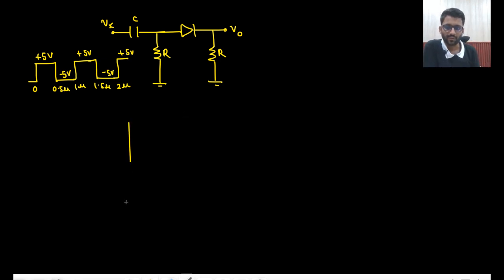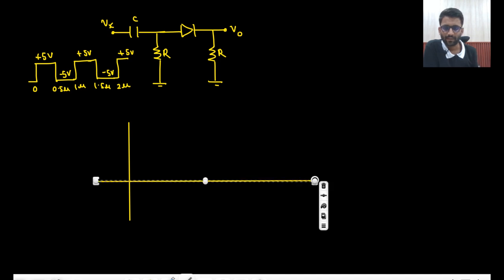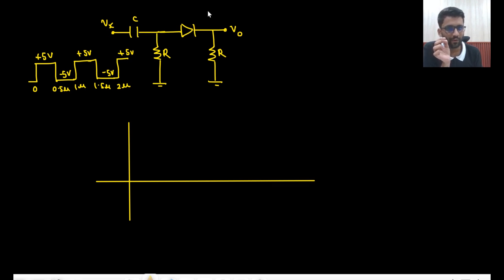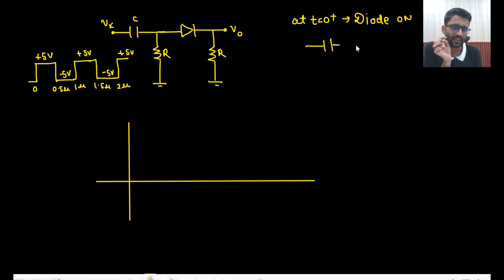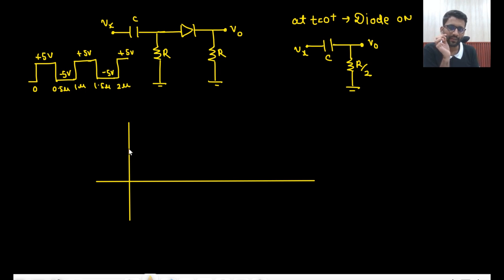Now let us draw the Vout waveform. Initially 5 volts will come, the capacitor is having 0 voltage, so 5 volts will directly come here and the diode will be turning on. At T equals 0 plus, diode turns on. If diode is on, the circuit will have C with R and R in parallel, so it would be R/2. This is C, this is Vx, this is Vout — so directly 5 volts will come and then it will discharge.